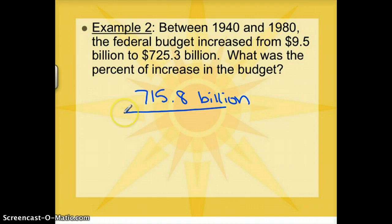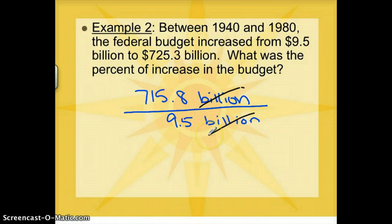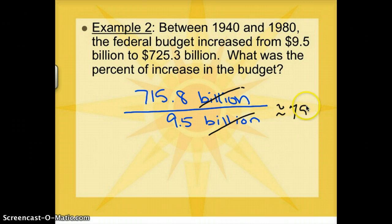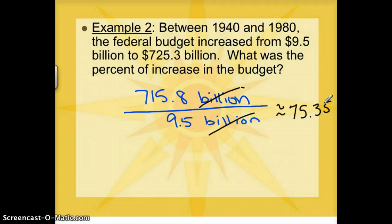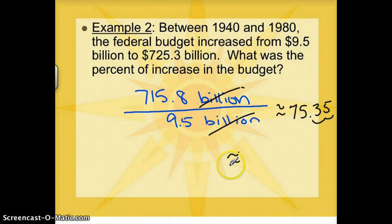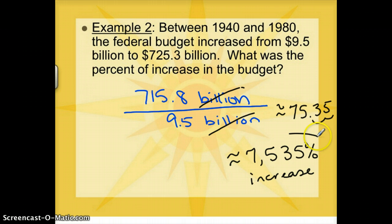Instead of writing all the billions, I can divide by a billion from the top and bottom and have those billions cancel. So I'm going to do 715.8 divided by 9.5, and I get an answer of about 75.35. You need to think: is that 75.35%? No, that's the number 75.35 as a decimal. So to change it to a percent, I'm going to multiply by 100 and move the decimal over two spots. It's about 7,535% increase in the budget — a huge percent of increase.